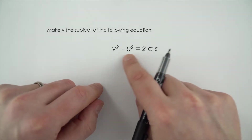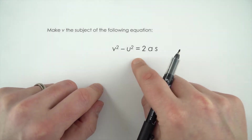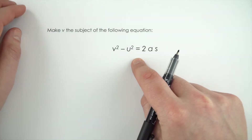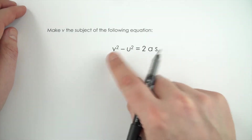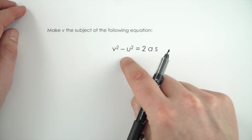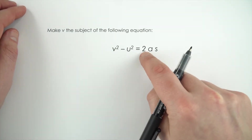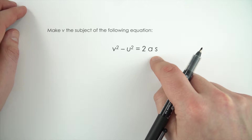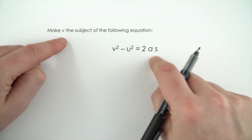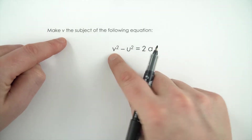This is probably one of the most complicated equations you might see in GCSE. v squared minus u squared equals 2as. And we need to make v the subject of this.